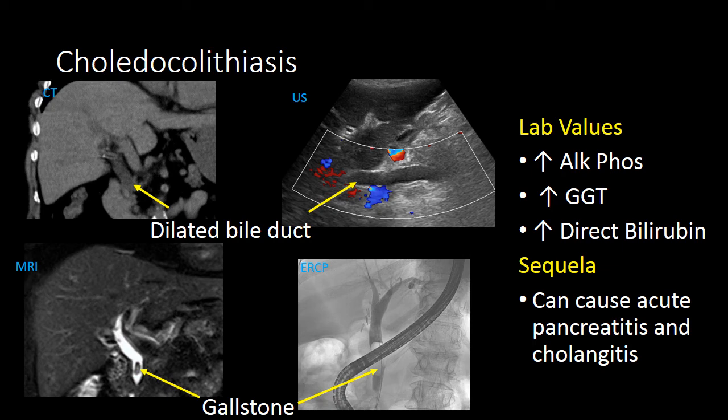MRI is one of our best modalities for evaluating choledocholithiasis and will clearly demonstrate filling defects in the bile duct, giving us a high degree of confidence that choledocholithiasis is the reason for the dilation and obstruction. Once a gallstone has been identified within the bile duct, the patient can proceed to ERCP where the presence of the stone is confirmed and removed with a balloon.